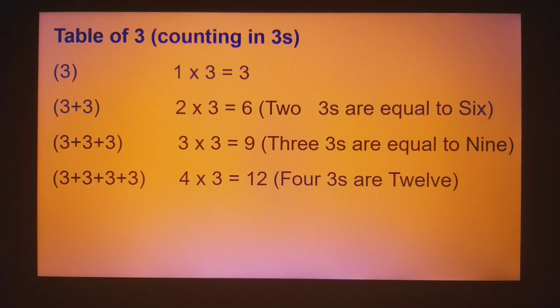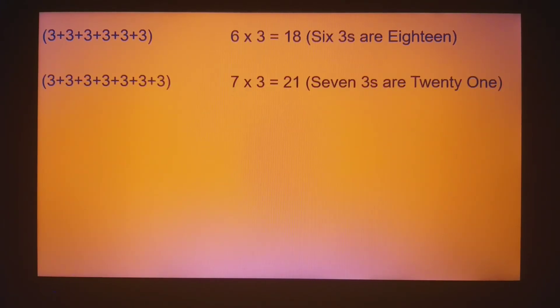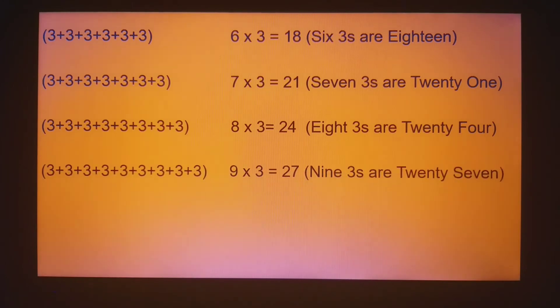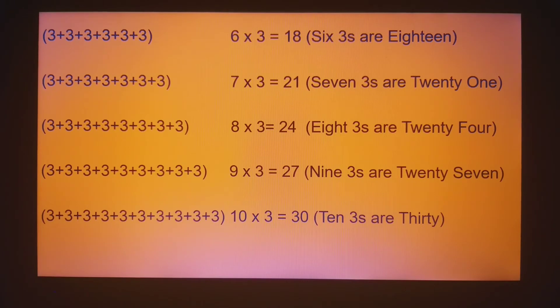Twelve. Five threes are fifteen, six threes are eighteen, seven threes are twenty-one, eight threes are twenty-four, nine threes are twenty-seven, ten threes are thirty.